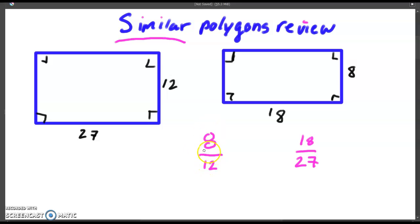8 and 12 are both divisible by 2. So we'll reduce it to 4 over 6. And we can reduce it by 2 again. We're going to get 2 over 3.